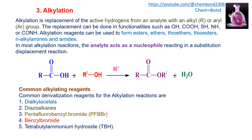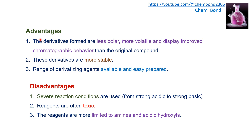Commonly used alkylating reagents include dialkyl acetals, diazoalkanes, pentafluorobenzyl bromides, benzyl bromides, and tetrabutylammonium hydroxide. Advantages include that the derivative formed is less polar, more volatile, and displays improved chromatographic behavior compared to the original compound. It is more stable and easily available. Disadvantages are that severe reaction conditions are used (acidic or basic medium), the reagents are toxic, and they are more limited to amines and acid hydroxyls.